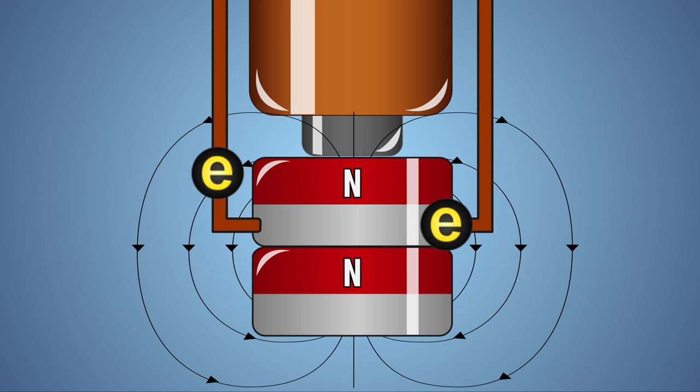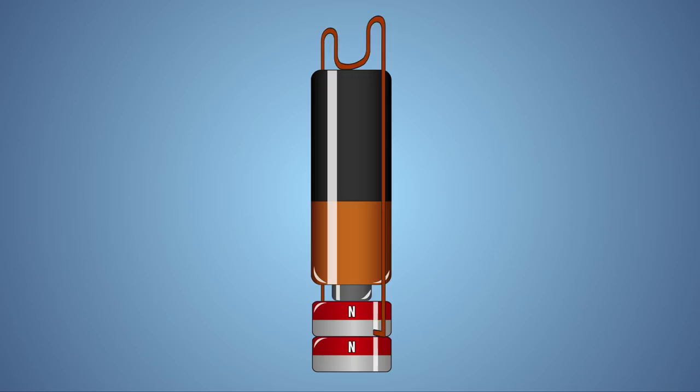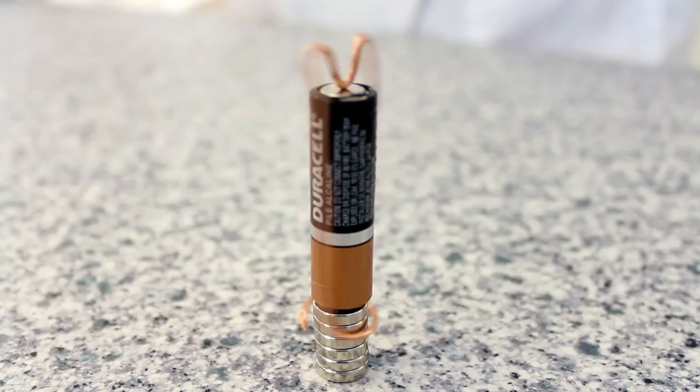The Lorentz forces generated by our moving electrons are strong enough and angled just right to push the copper wire, causing it to spin. As long as the electrons continue to flow through the magnetic field of our magnet, the Lorentz force will provide a constant push that keeps the wire spinning.